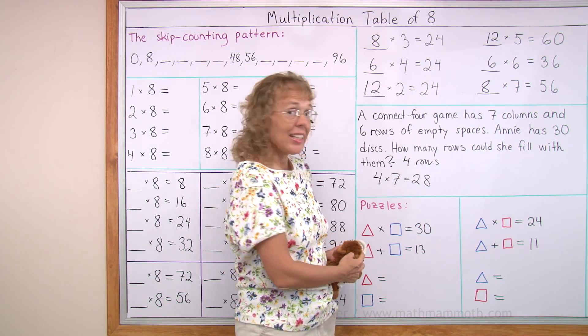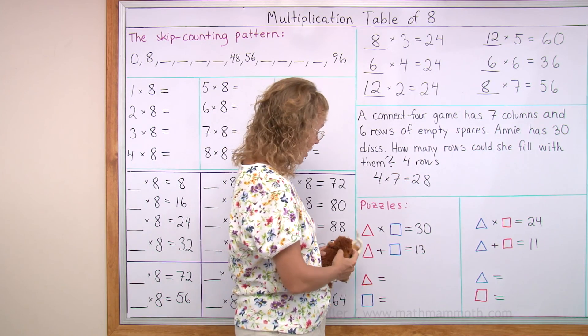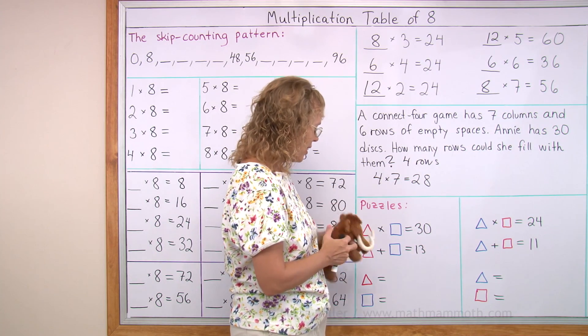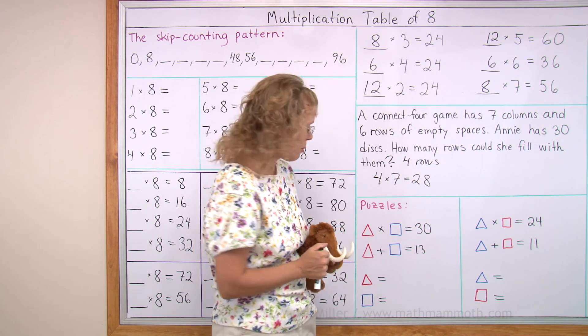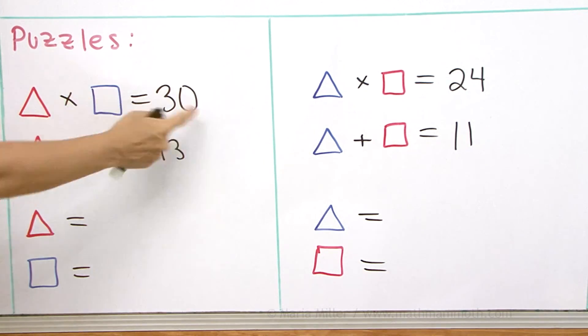Hmm. Guess and check. Yep. Matthew's telling me that 6 and 5 is not going to work. 6 times 5 equals 30. But 6 plus 5 does not make 13.